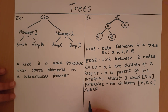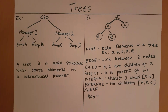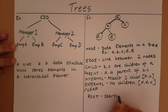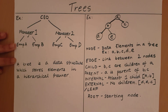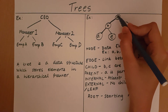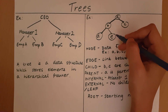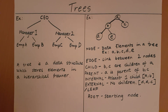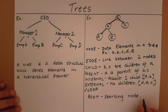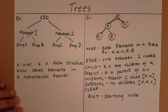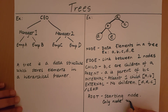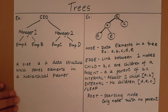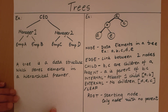Another term we must familiarize ourselves with is what is a root. A root is going to be the starting node of a tree. So where does this tree start? We are going to start branching out from A — A will branch out to B and C, and B will in turn branch out to D and E. So the root is going to be the starting node which is at the highest level. It is important to note that the root is the only node in a tree which does not have a parent. Every other node will have a parent except the root node. In this example, our root node is going to be A.